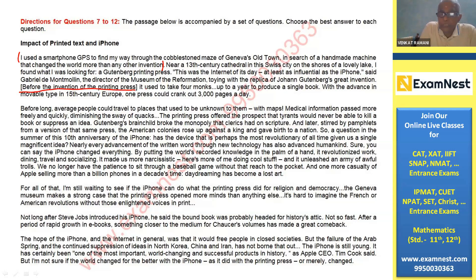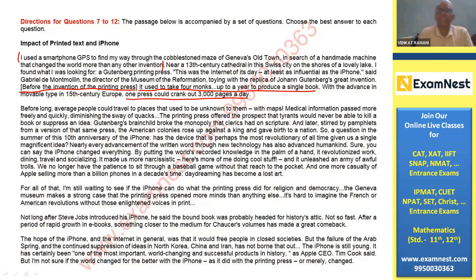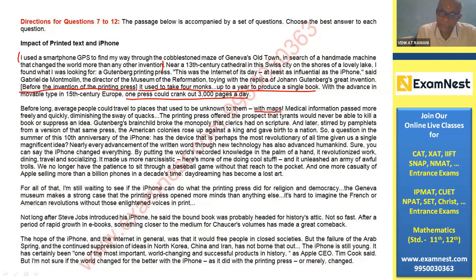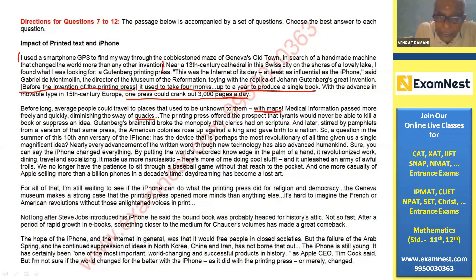Before the invention of the printing press, it used to take four monks up to a year to produce a single book. With the advance in movable type in 15th century Europe, one press could crank out 3,000 pages a day, so information could be shared and disseminated without much problem. The second paragraph says that for a long time average people could travel to places unknown to them with maps, and there was dissemination of medical information — all made possible by the printing press. A quack is a charlatan, a pretended doctor.